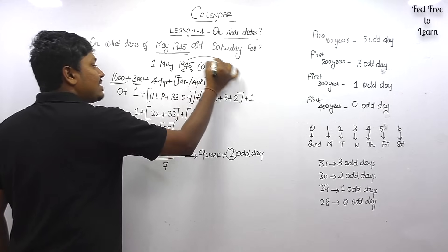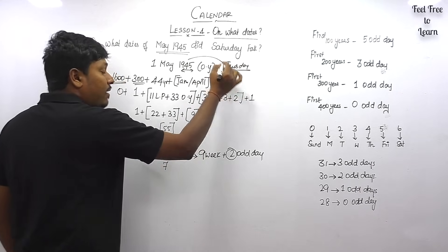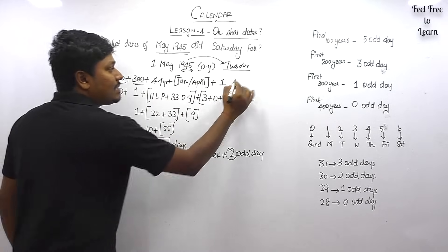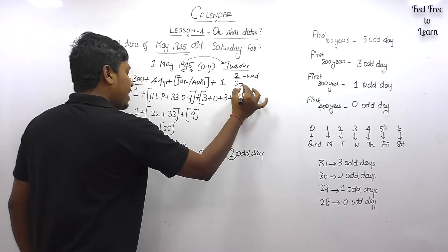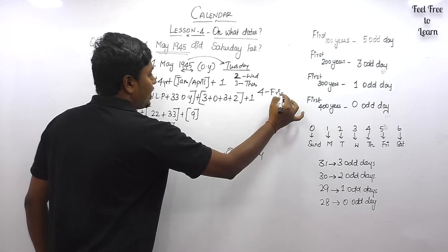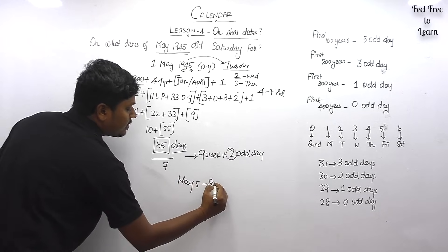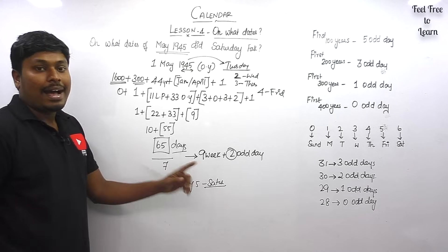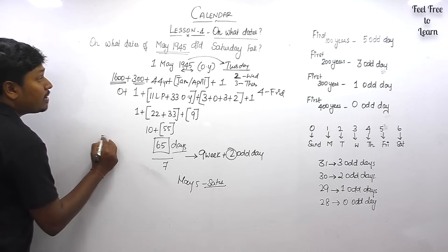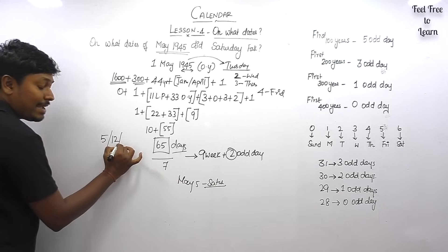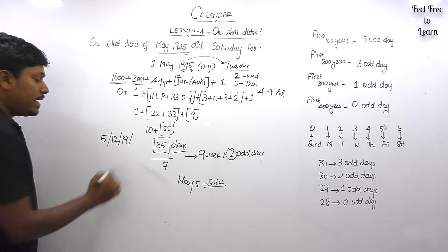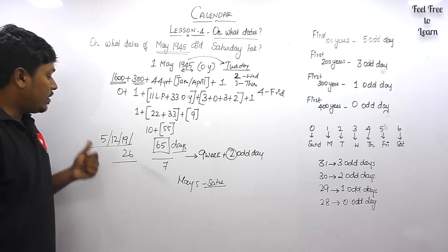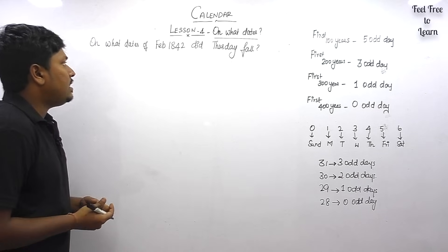The 2nd odd day is Tuesday, so 1st May 1945 is Tuesday. Our target is to find all the Saturdays. From Tuesday: 2nd May is Wednesday, 3rd is Thursday, 4th is Friday, so 5th May is the first Saturday. Every consecutive 7 gives another Saturday: 5th, 12th, 19th, 26th. So in May 1945, Saturdays fall on 5, 12, 19, 26.